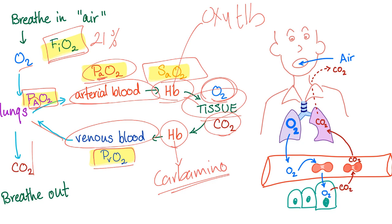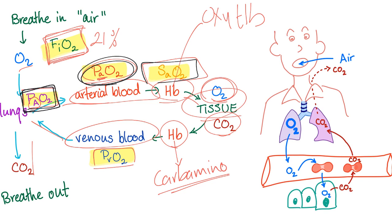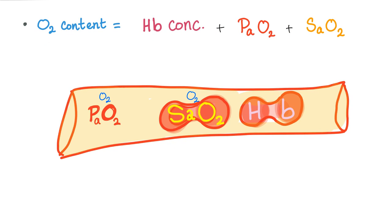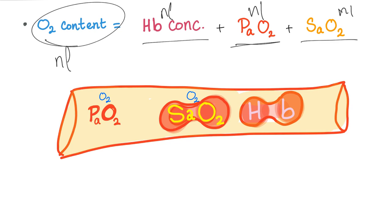The effect of cyanide on each parameter: FiO2 — normal. PAO2 in the alveoli — normal. PaO2 — normal. SaO2 — normal. Hemoglobin concentration — normal (anemia reduces this but not cyanide). Therefore, arterial oxygen content is normal. But the partial pressure of oxygen in the vein — PVO2 — is increased. In cyanide poisoning, venous oxygen content is elevated.